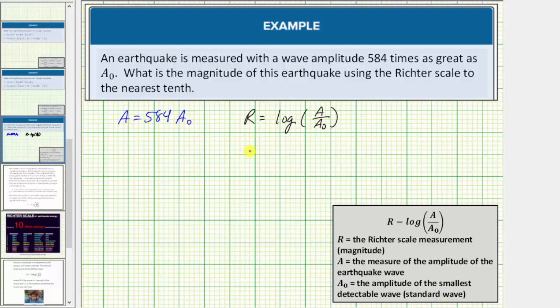This will give us R the magnitude equals log of A, which is 584 A₀ divided by A₀. Well A₀ divided by A₀ is equal to one, which means the magnitude of R is equal to log of 584.